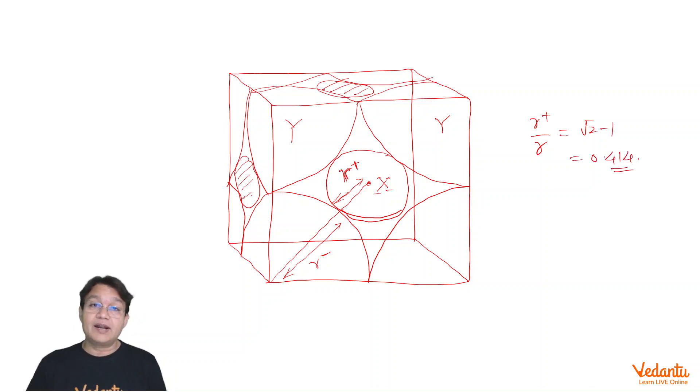In fact, it is similar to the octahedral void radius ratio. The only difference is in octahedral void, the particle or the cation touches six atoms, but here it is touching only four atoms.